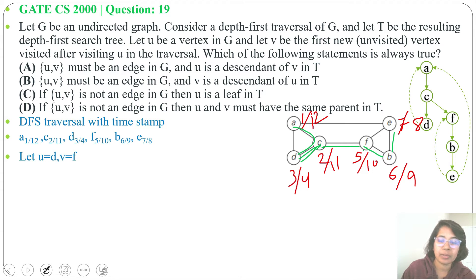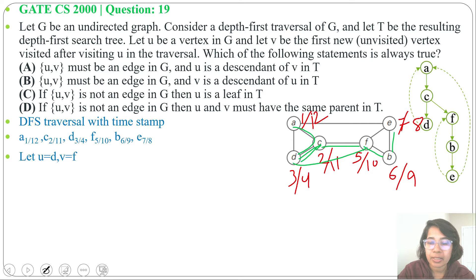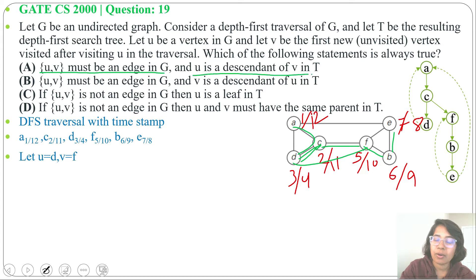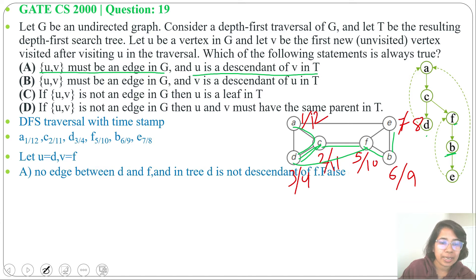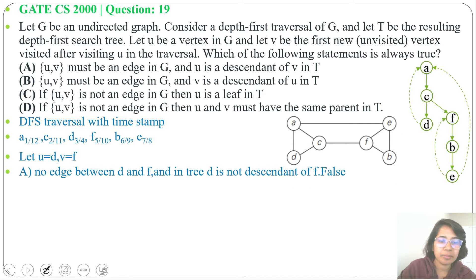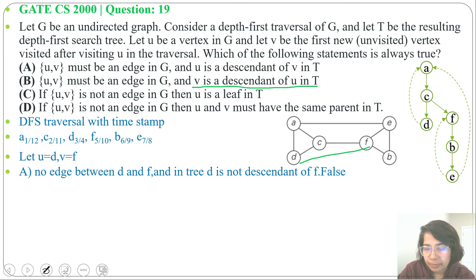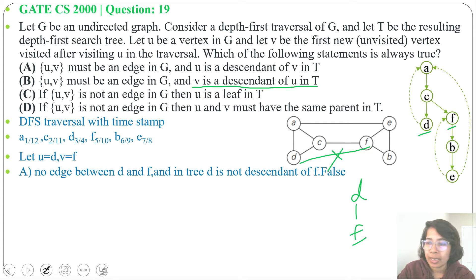Now suppose U equals D and V equals F. Let's recall the options. Option A: U–V must be an edge in G, and U is a descendant of V in T. Is there an edge between D and F? No — D to C, then C to F; there is no direct edge. And D is not a descendant of F — B is a descendant of F, but not D. So option A is false. Option B: U–V must be an edge in G, and V is a descendant of U in T. Again, there is no edge between D and F, and F is not a descendant of D — F is a descendant of C, but not of D. So option B is false. Neither U nor V are descendants of each other, and there is no edge between U and V.